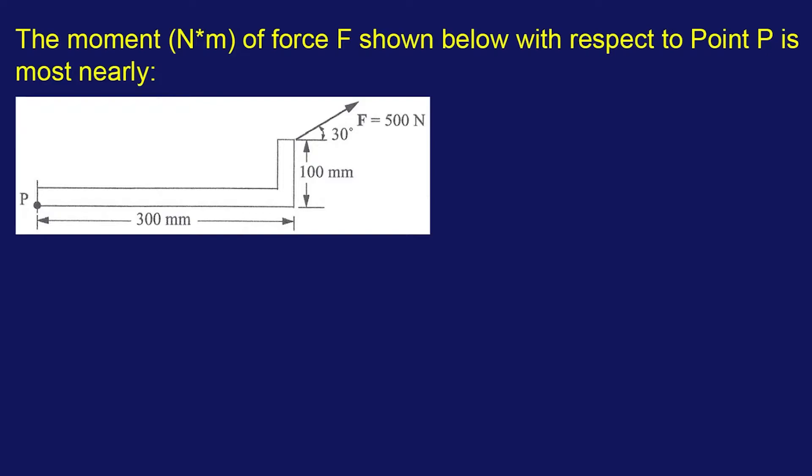We're going to solve the moment of the F force relative to the point P. Now, you could use the fancy equation, use the cross product R cross F, or P all the way to the point of force is R. And then that's a vector. Then you do the cross product of F relative to that vector.